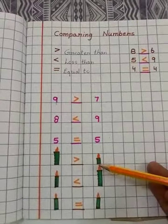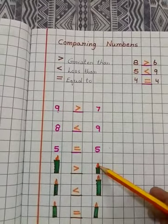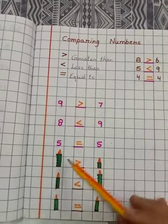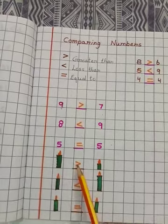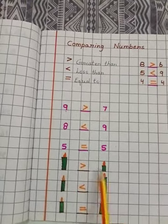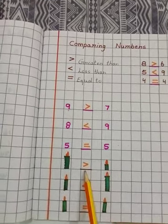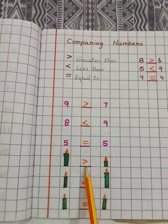Look at here. These are two candles. First one is greater than the another one. So we use greater than.